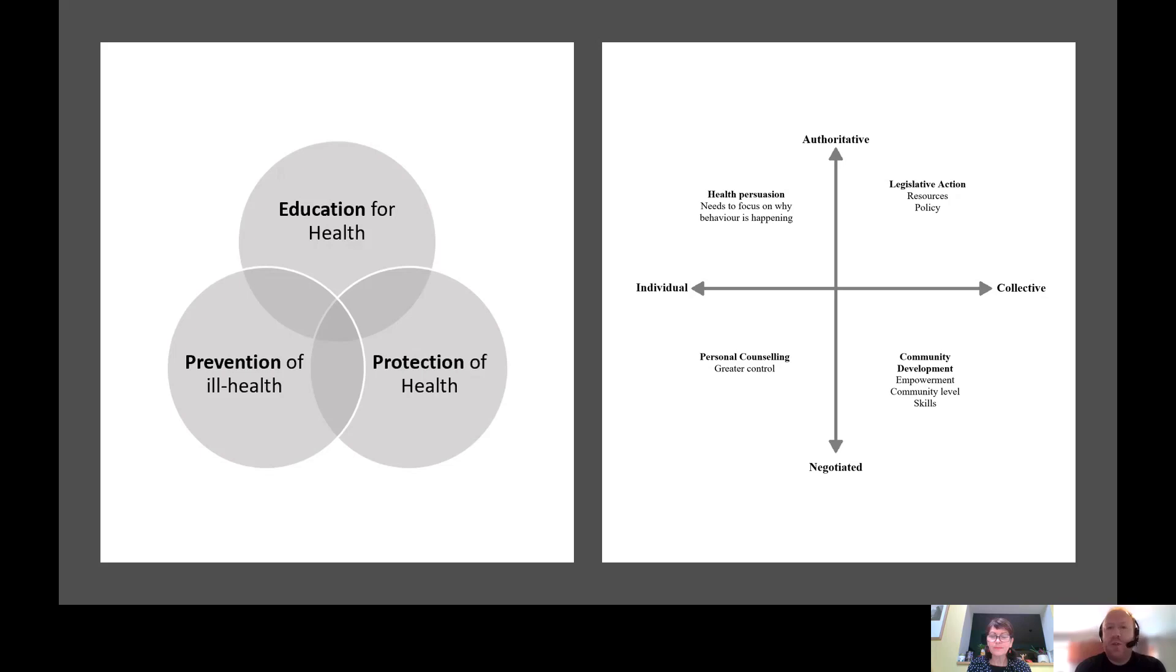Tannehill's model is really important because it was one of the first health promotion models that tried to conceptualize what health promotion was about. It's important to place it in a historical context because this model was developed in the mid-1980s, around the time of the Ottawa Charter.